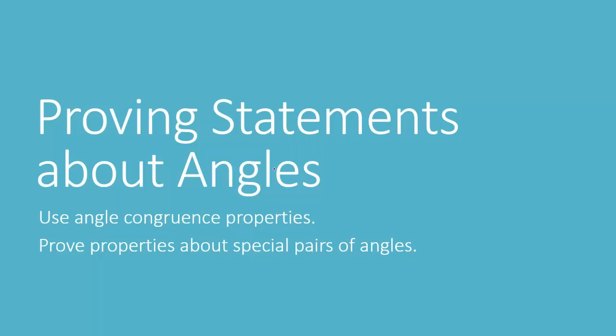Hello. In today's lesson, we're looking at Chapter 2, Section 6, Proving Statements About Angles. Our objectives are to use angle congruence properties and prove properties about special pairs of angles.